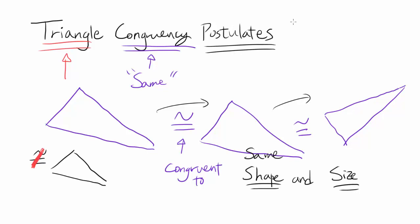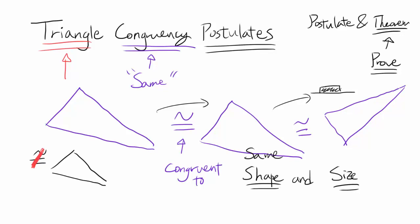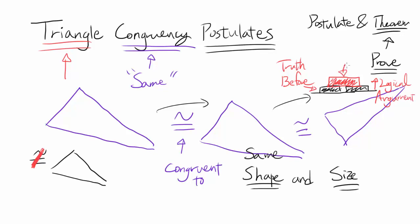Postulate is different from theorem — they are not the same thing. A theorem is something you can prove from postulates and other theorems that come before it. Think of it like a building: you start with truths you already know, use logical argument as the worker constructing the building, and prove the theorem. So a theorem is something you prove from the things you already know to be true.